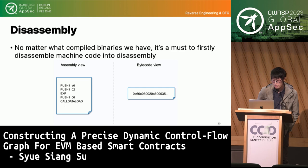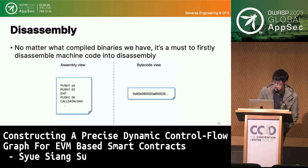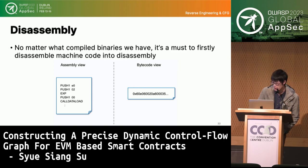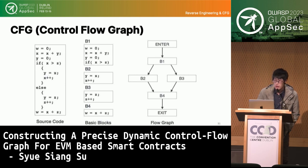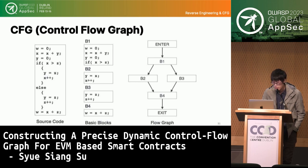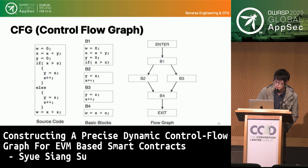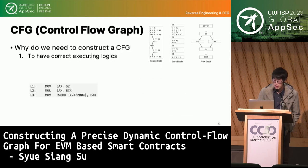No matter what compiled binaries we have, it is essential to first disassemble machine code into disassembly. On the left is disassembly produced from bytecode on the right. For example, the first two bytes — 60 E0 in hex — push a one-byte value E0 onto the stack. We then turn the disassembly into a Control Flow Graph, or CFG, a very important structure in reverse engineering. With a CFG, we can understand how a program flows, when it branches, and so on. This structure also helps recover the disassembly back to a high-level view of the program.